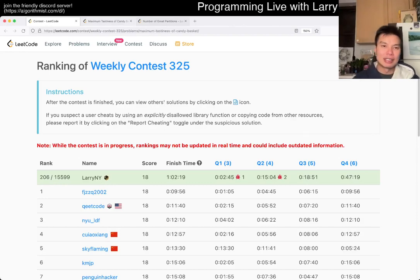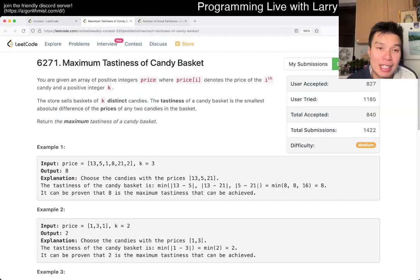Hey, hey everybody, this is Larry. This is me going through problem 3 of the Weekly Contest 325, Maximum Tastiness of Candy Basket. Hit the like button, hit the subscribe button, join me on Discord, let me know what you think about this problem. So this one actually I did pretty quickly, which I'm happy about because I did kind of party on all the other ones.